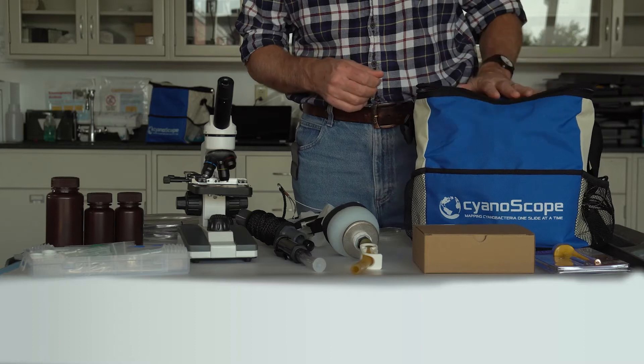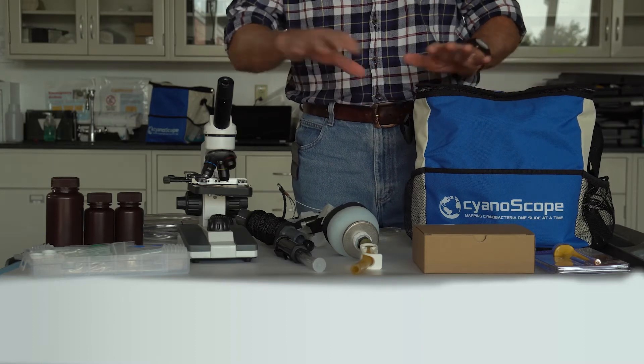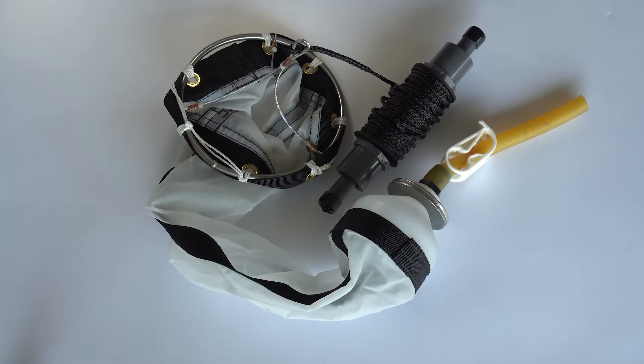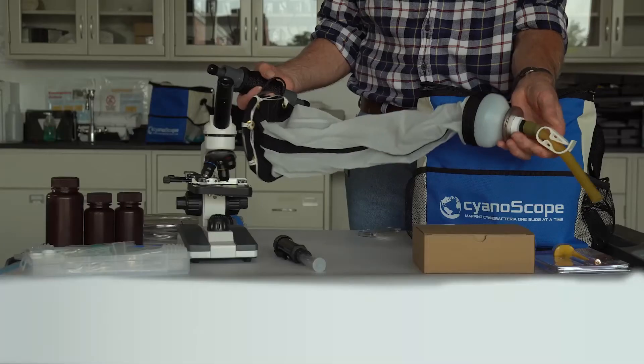In the case, you will find multiple tools you will use to collect samples to test for cyanobacteria concentration. This includes a 53 micron net that will concentrate your samples of phytoplankton and zooplankton.